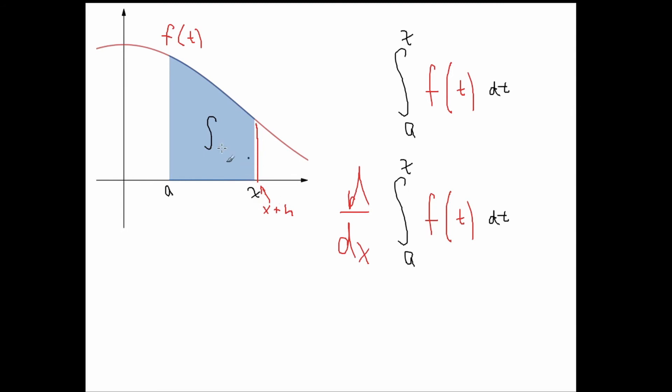If you add x by a little bit, how would that change the area? How would that make the area different? Well, it would just equal your original function. Because if you add x to h, it will become a new point on this f of t curve.